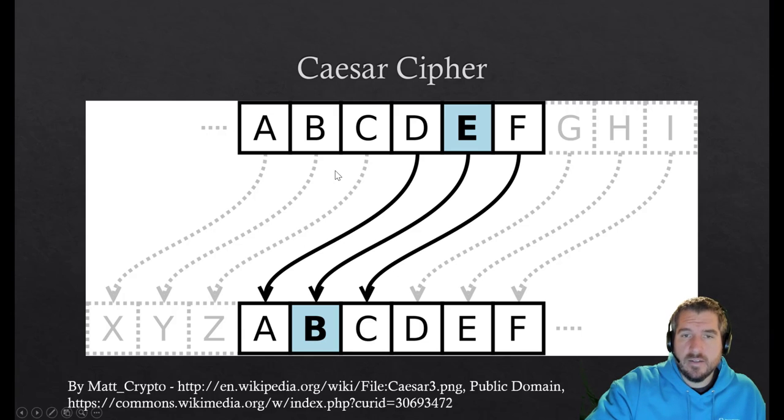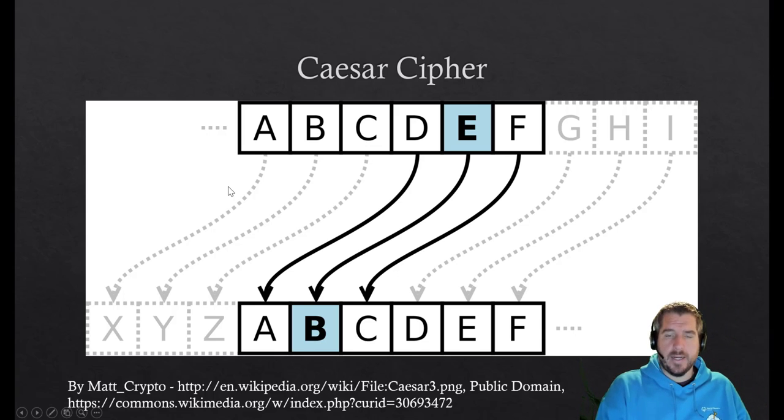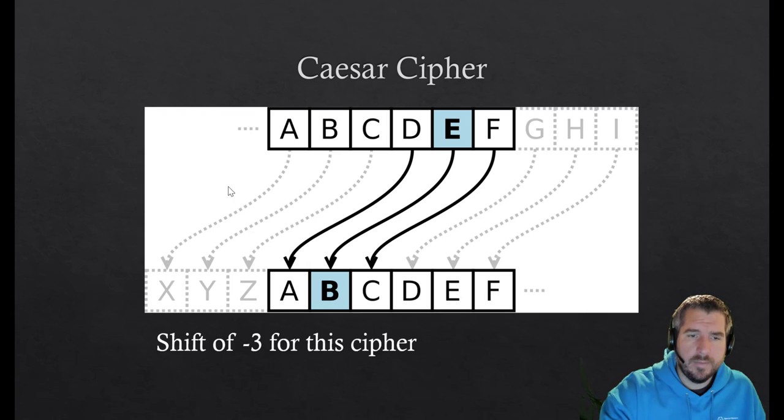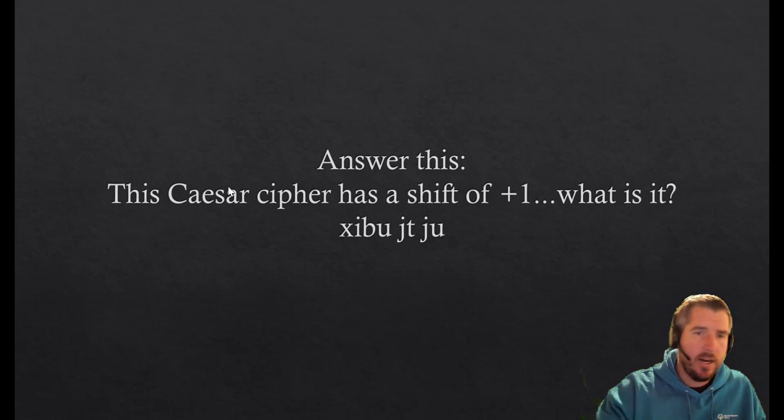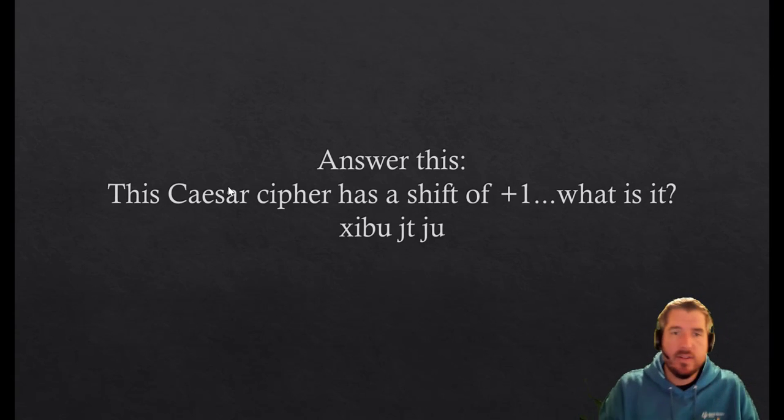You could do this in different ways because I could shift—this shifts three over, right? But I could shift ten over, fifteen over, I could shift one over, and it does the same thing. So let's try our hand at this. This is a Caesar cipher that has a shift of plus one.